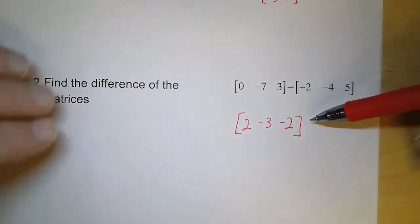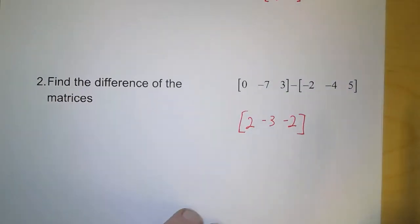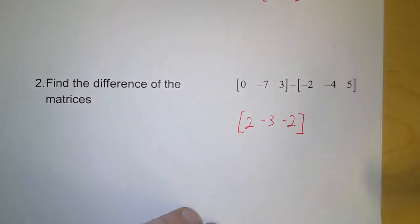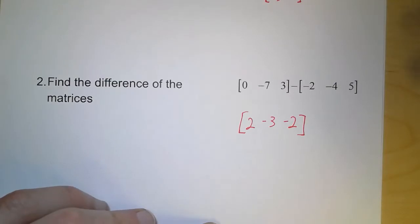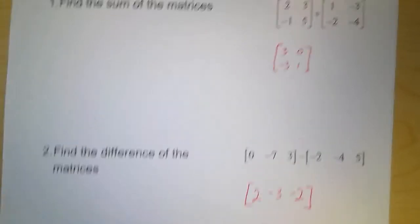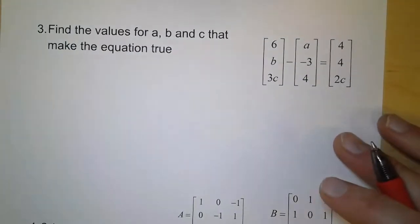And so this, our difference, is also going to be a 1 by 3 matrix. Anytime you see two matrices that have orders that don't match, you can just bypass that problem because that's impossible. Any two matrices must be of the same order in order to be added or subtracted.